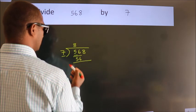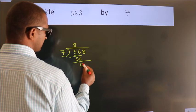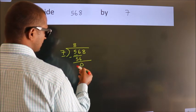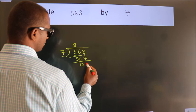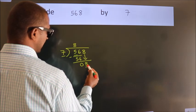Now we should subtract, we get 0. After this, bring down the beside number. So 8 down.